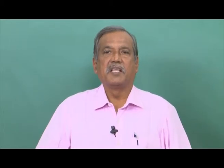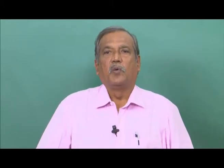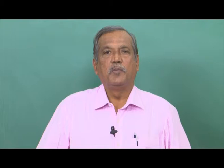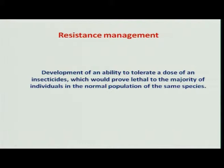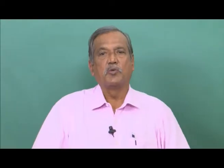Hi friends, in the last class we understood what are the considerations to be given while selecting a chemical or a pesticide to be included in pest management. To continue that discussion on chemical control in IPM, one of the next important aspects is insecticide resistance development and its management — why insects develop resistance is one of the important questions to be answered.